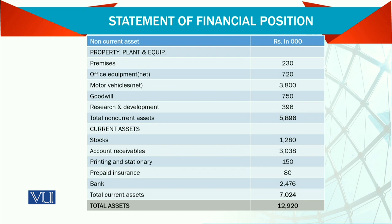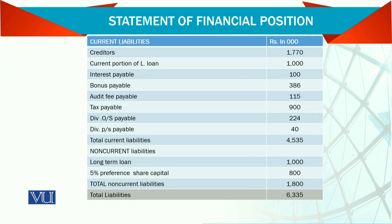Then we have current assets: store and spare, stock and trade. If it is a trading business, we simply call it stock and trade, but if it is a manufacturing business, it will be raw material stock, work-in-process stock, and finished goods stock. Then prepaid insurance if you paid something in advance, then bank account, and total current assets. Current liabilities are amounts owed to be paid within the next one year: creditors, current portion of long-term debts, interest payable, bonus payable, audit fees payable, taxes payable, dividend outstanding payable, and so on.